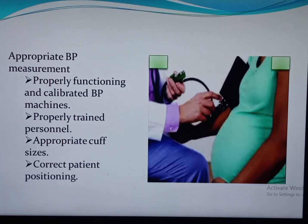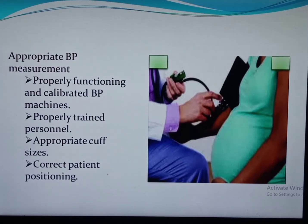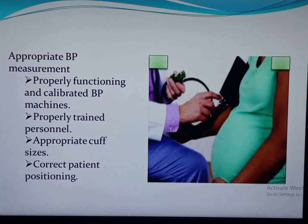During measurement, the arm should be supported at the level of the heart. If left unsupported, it increases blood pressure by 10 to 12 mmHg due to hydrostatic pressure induced by gravity. Blood pressure should initially be taken from both arms and compared; thereafter it should be taken from the arm with the higher reading. In general, since the right arm tends to have higher blood pressure, we commonly take it from the right arm.